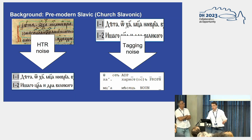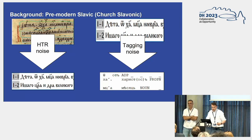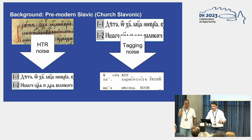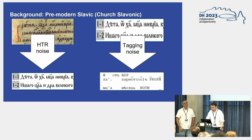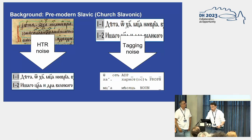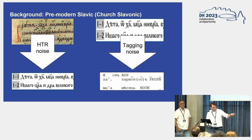The first type of noise is HTR — handwritten text recognition. We intentionally do not correct the results of the handwritten text recognition. Afterwards, we apply full morphology tagging and part-of-speech tagging. We also do not correct those results, and we will figure out what happens.